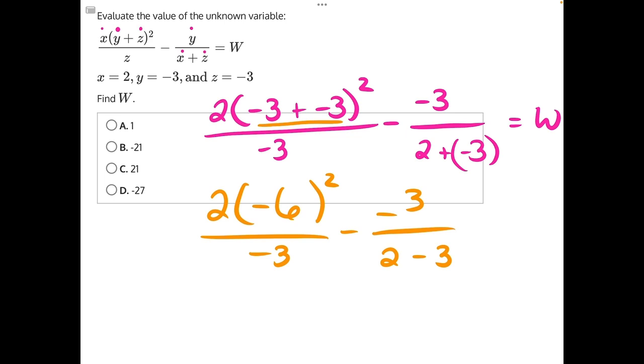Now we can resolve our exponent. So negative 6 times itself, or squared, would give us a positive 36. So now we have 2 times 36 over negative 3 minus negative 3 over, and we might as well take care of this right here, 2 minus negative 3 would give us a negative 1.